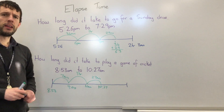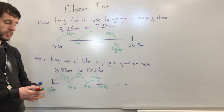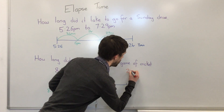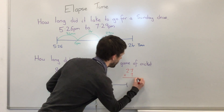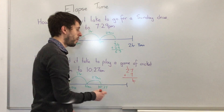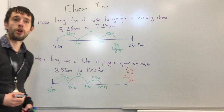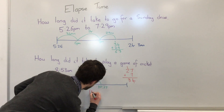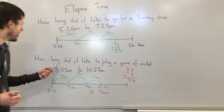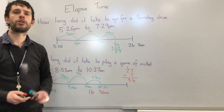Now I know I've got 1 hour and I just need to add my minutes together. I've got 27 minutes and I'm adding 7 minutes, so 27 plus 7: 7 plus 7 equals 14, carry the 1 — 2 plus 1 equals 3. So that gives me 1 hour and 34 minutes. How long did it take to play a game of cricket? 1 hour and 34 minutes.